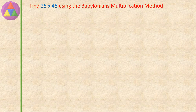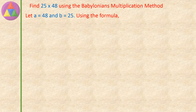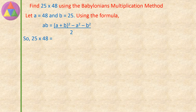Find 25 into 48 using the Babylonian's Multiplication Method. Let A equals 48 and B equals 25. Using the formula AB equals A plus B whole square, minus A square, minus B square, divided by 2. So 25 into 48 equals 48 plus 25 whole square, minus 48 square, minus 25 square, divided by 2.